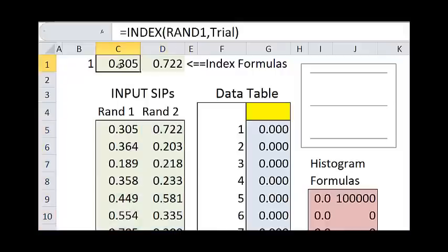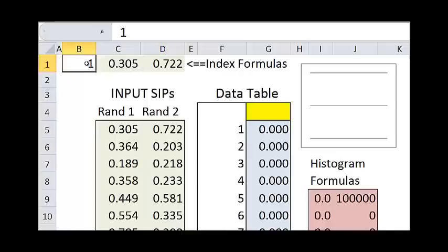These formulas up here are index formulas. They are driven by this cell over here. So I change this from 1 to 2 to 3. The index formulas point down to the various rows of the SIPs.